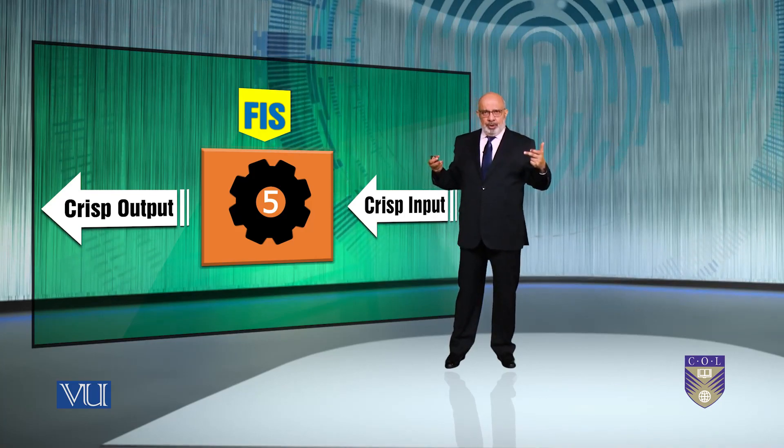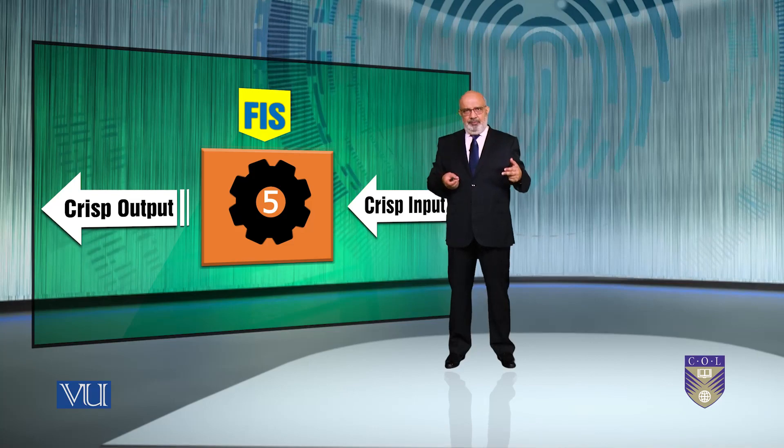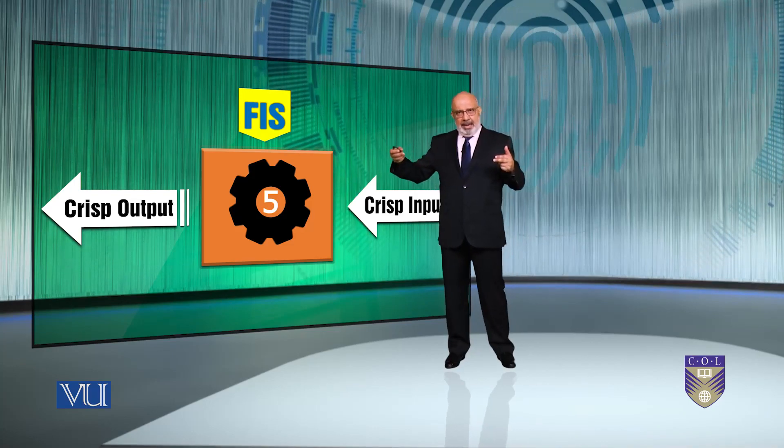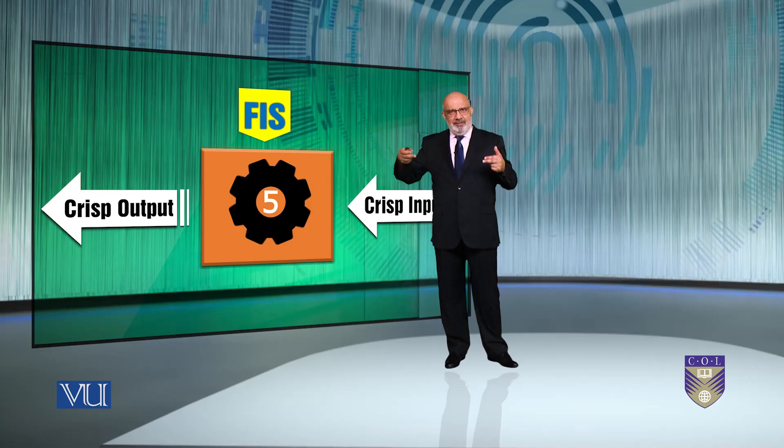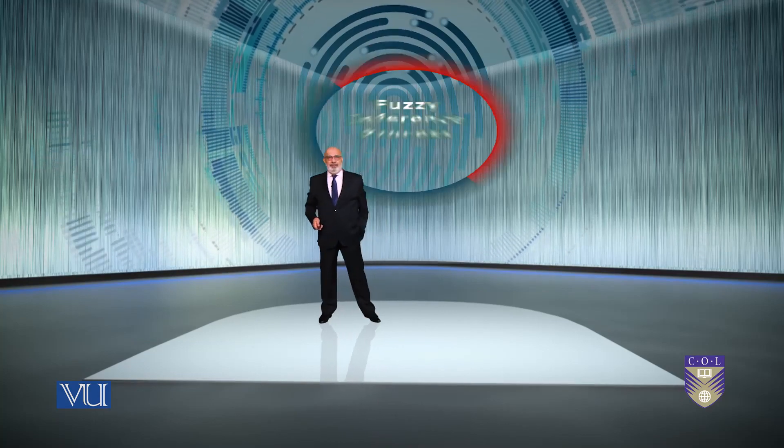So a crisp input going through five steps of fuzzy inference process and ultimately come up with a fuzzy output. So both ends are crisp input and output. In between is the fuzziness and the inference process. So what are the five steps?